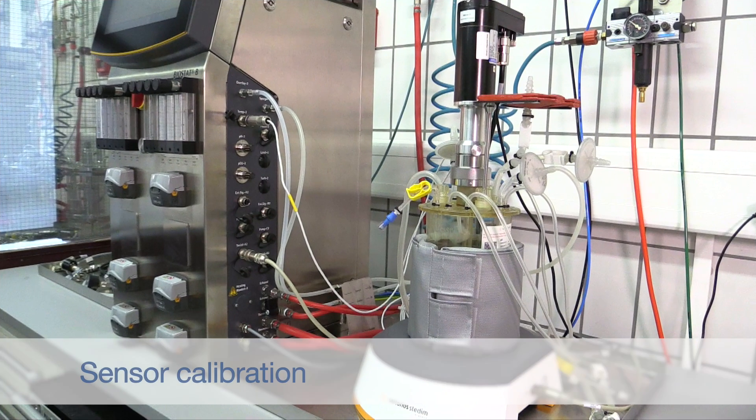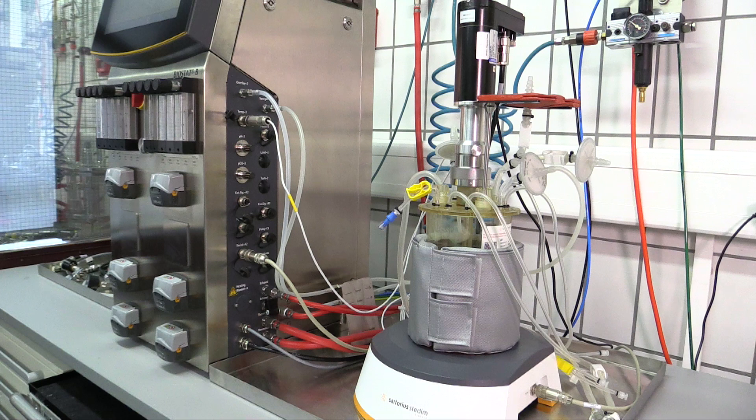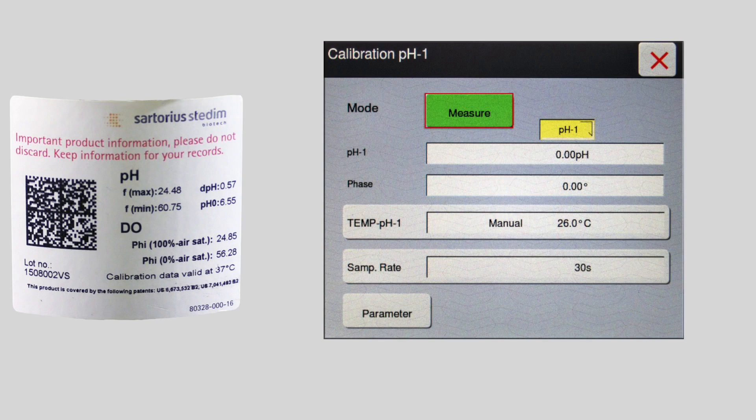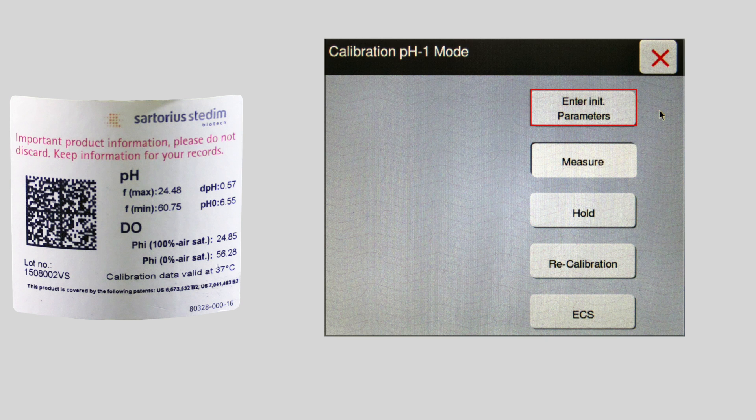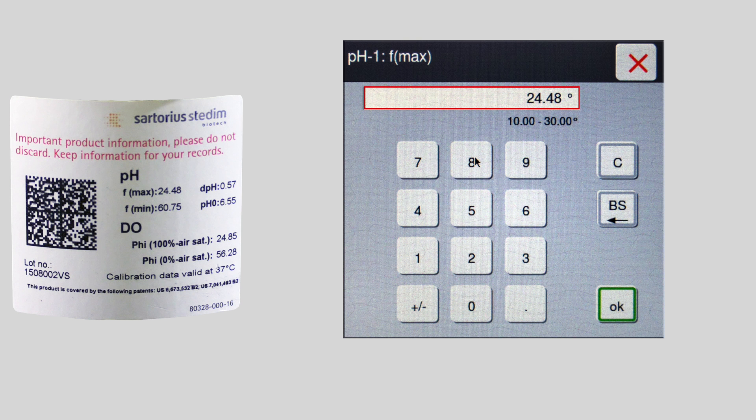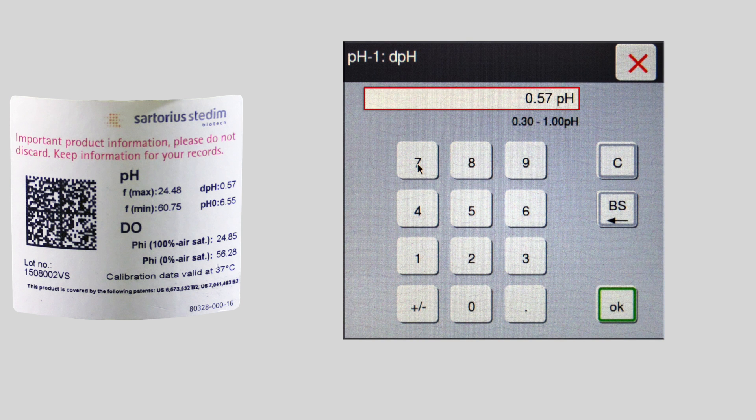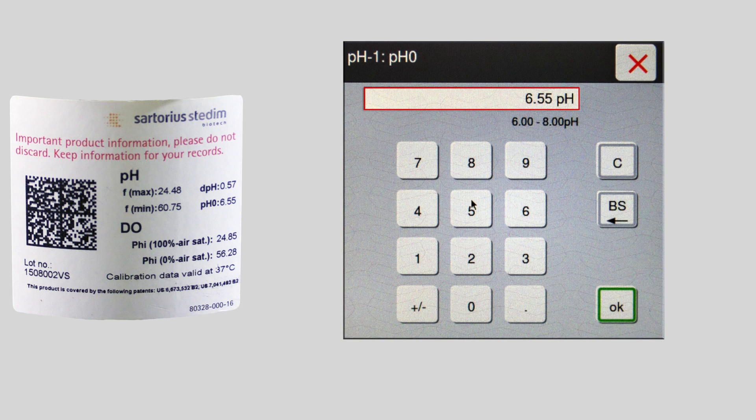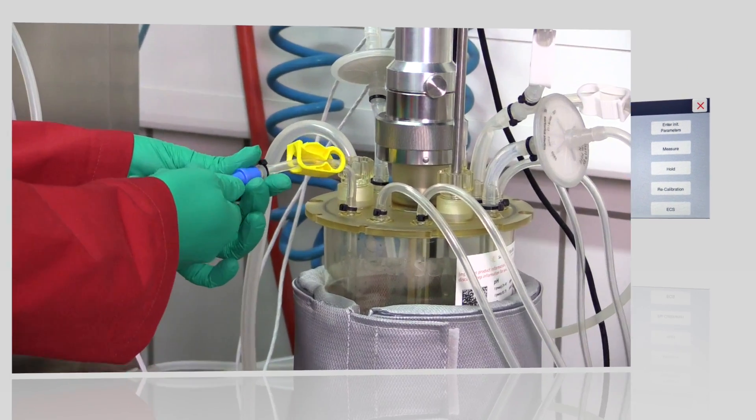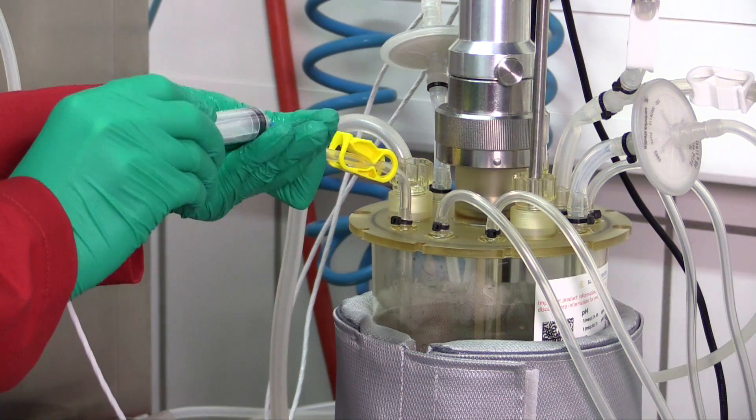When the temperature and process signals are stable, the sensors can be calibrated. The calibration differs from the conventional procedure as sensor patches are integrated into the sterile vessel. The sensor patches are calibrated by the manufacturer and calibration data are delivered with the bioreactor. First, the data from the labels are entered into the control unit.